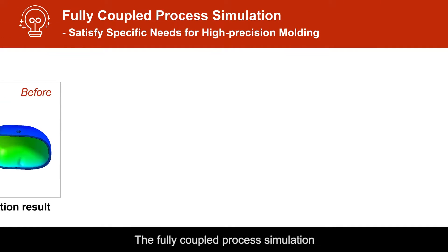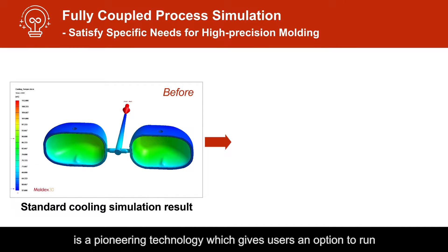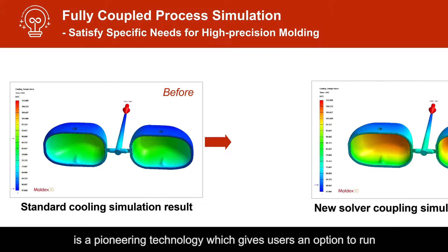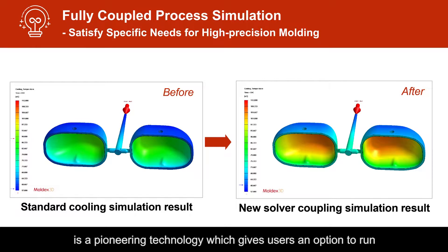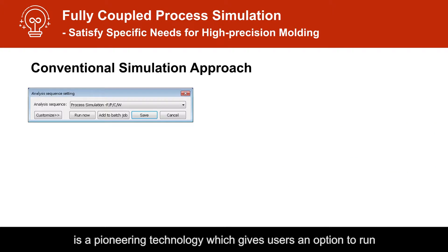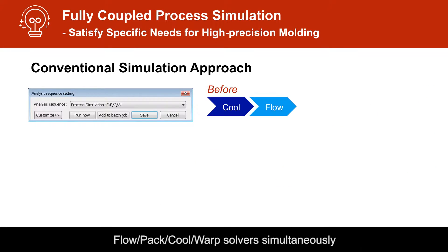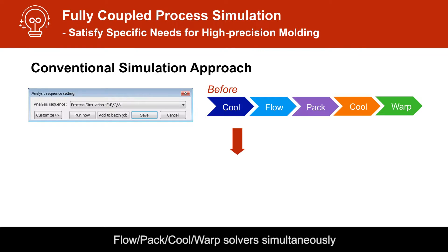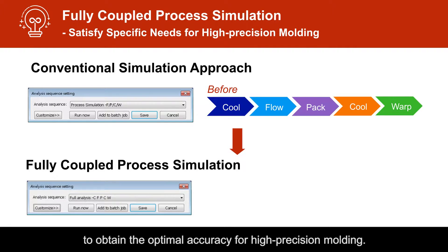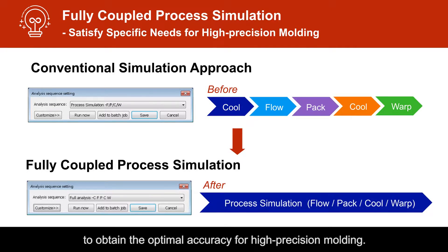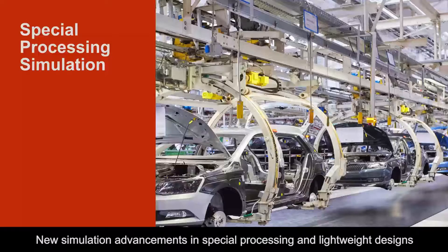The fully coupled process simulation is a pioneering technology which gives users an option to run flow, pack, cool, and warp solvers simultaneously to obtain the optimal accuracy for high precision molding.